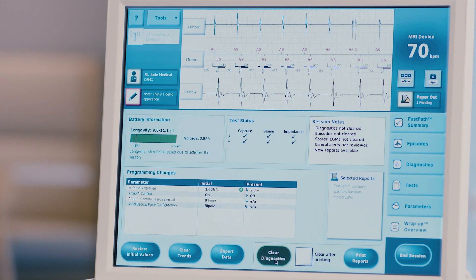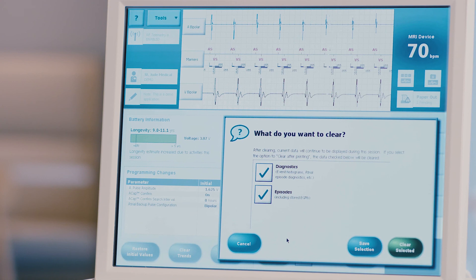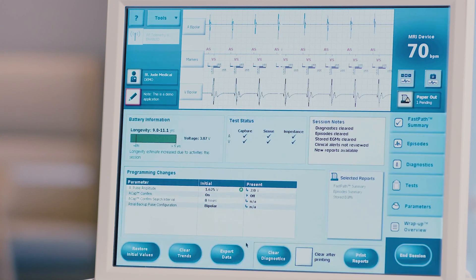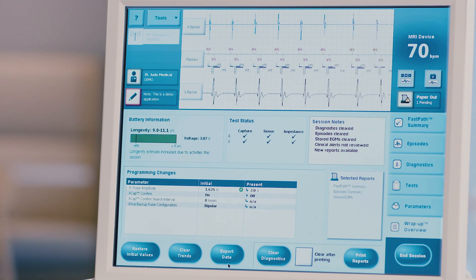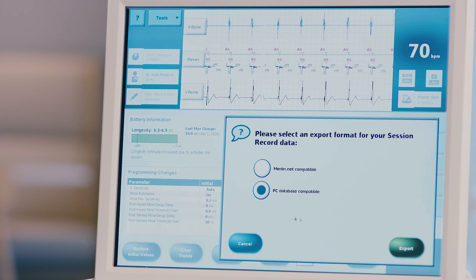Press the green clear diagnostics button to clear device diagnostics and stored episodes. The what do you want to clear screen will appear. Check the appropriate boxes to permanently clear information from the device. Press the green clear selected button. If you need to export reports for EMR uploading, press the export button at the lower right of the screen. For most EMR software, you will need to choose the PC database export option.